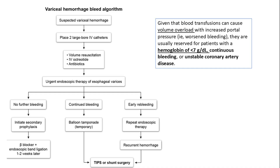With continued bleeding, perform balloon tamponade as a temporary measure. In cases of early re-bleeding, perform repeat endoscopic therapy and consider TIPS or shunt surgery if bleeding continues.